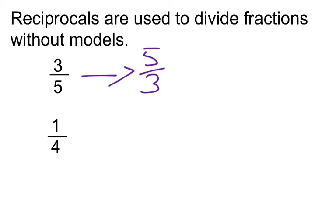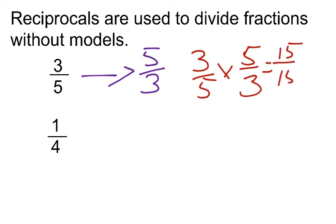And just to show you, its result when multiplied is always 1. So 3 times 5 is 15, and 5 times 3 is 15, 15 over 15 is 15 out of 15, which is 1 whole.